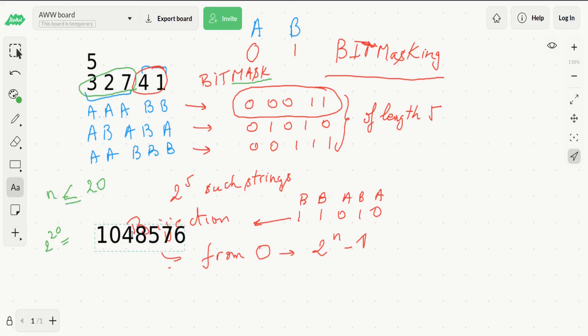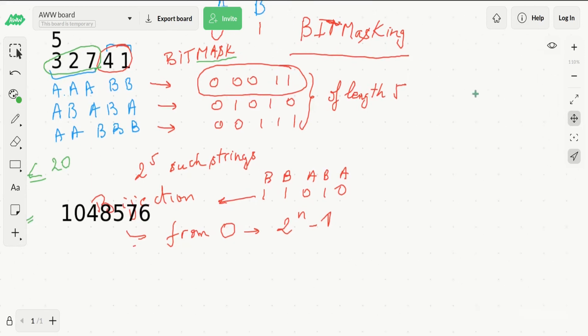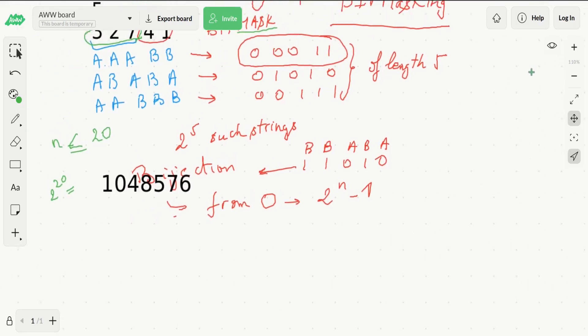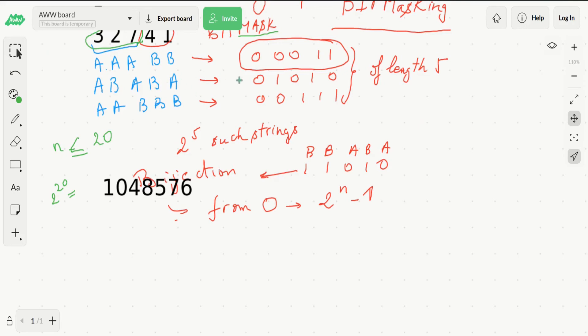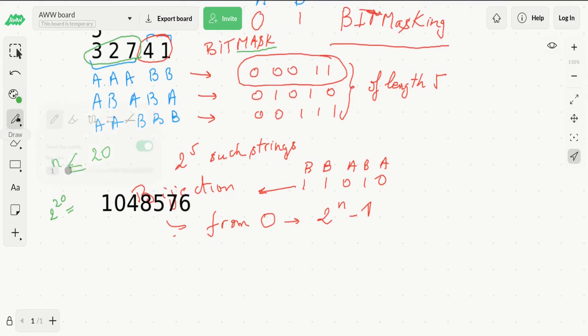But this is not actually our total complexity. Because each time we go through a string, we'll have this loop from 0 to 2 to the n minus 1, which will take this number of iterations.